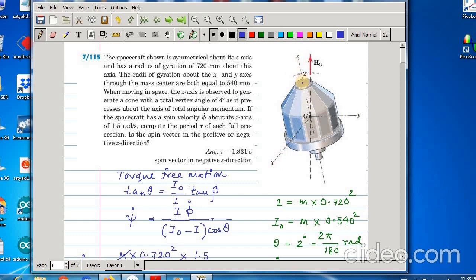That means it is precessing and nutating - the small z is precessing, small x, y, z is precessing and nutating but not spinning.